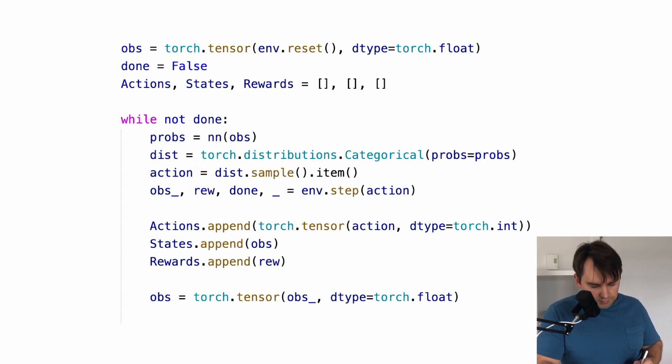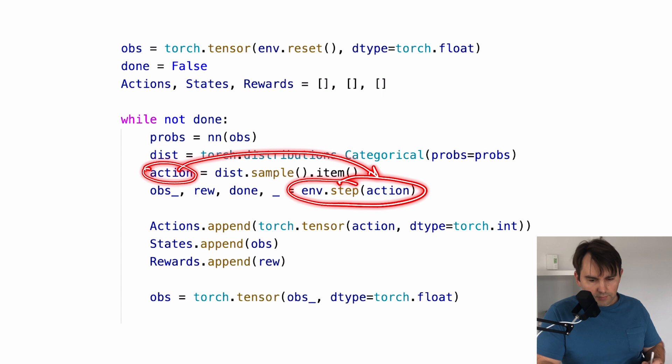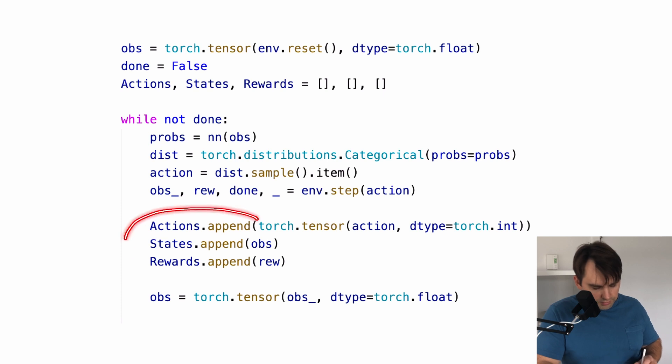After that, we use our action to take a step in the environment. As all of this is happening, we store all of the action states and rewards in these arrays. So we're storing the history of things happening. We will need them later.